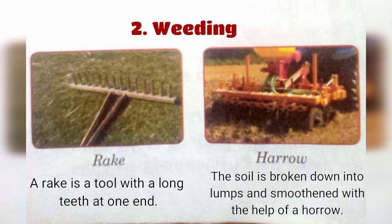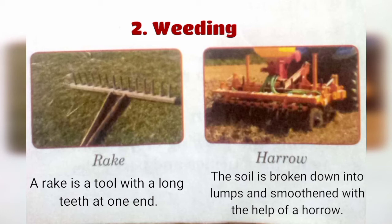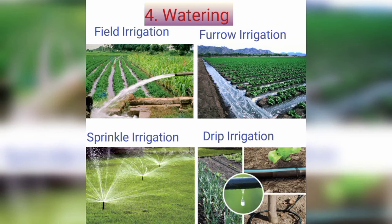The next step is sowing. Once the soil is ready, different crops are grown. Healthy and ripe seeds of the best variety are selected and sown. There are many scientifically developed seeds which give more crops or grow faster.